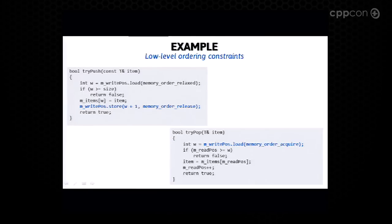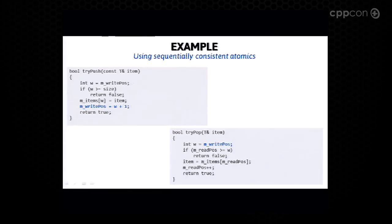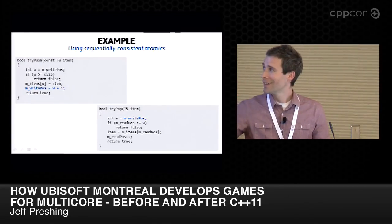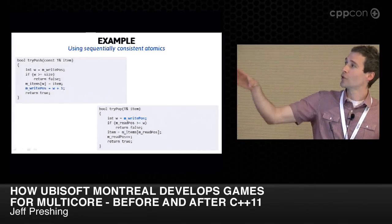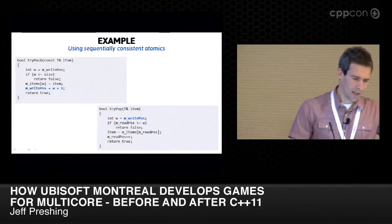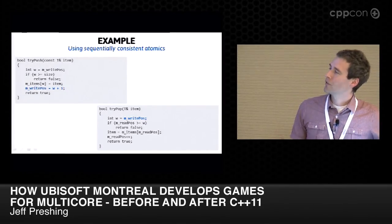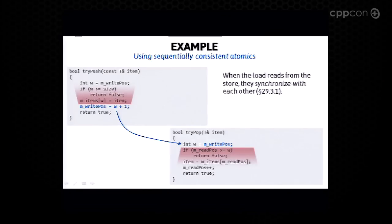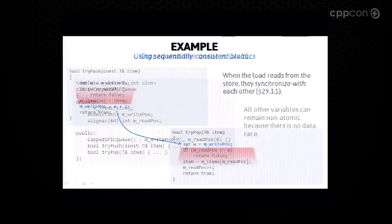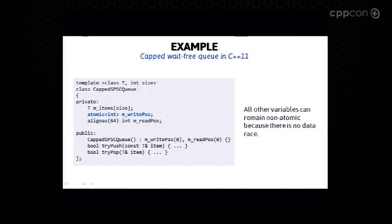Why not complete the circle and convert this to sequentially consistent atomics? When we do that, it looks identical to the original flawed volatile int implementation — only this time it's not flawed, because we're using atomic<int> for write_position with default sequentially consistent behavior. In sequential consistency, every atomic store has release semantics and every atomic load has acquire semantics, so when the load reads from the store they synchronize. We don't even have to convert anything else to atomics — just that one shared variable, m_write_position. Everything else has no data race.